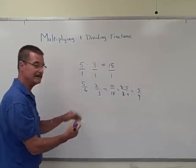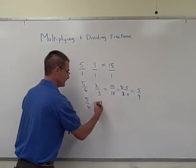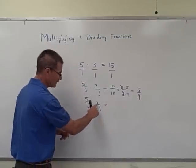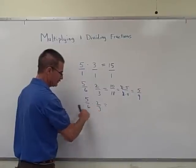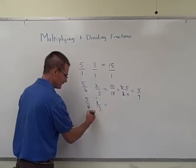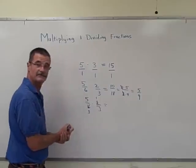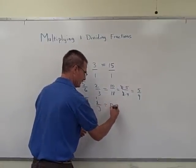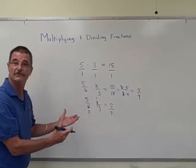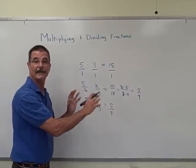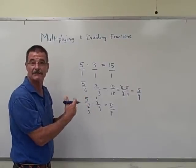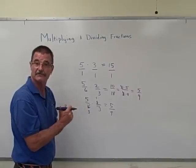We could have done that slightly different. We could have done 5 over 6 times 2 over 3. We could do a thing called cross-cancelling where we say, oh look, the 6 and the 2 have something in common. We can take 2 into itself once. We can take 2 into 6 three times. And now we get 5 times 1, which is 5. And we get 3 times 3, which is also 9. So there's two different ways to do the problem. You can go ahead and multiply it out and reduce at the end or you can cross-cancel. I prefer to cross-cancel because of the fact that it seems like it's quicker and faster for me.